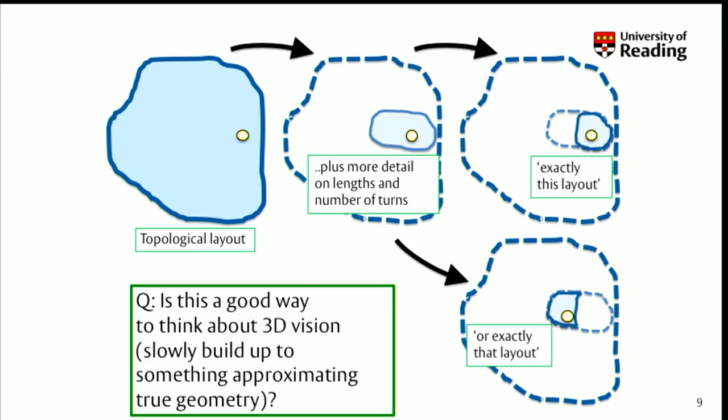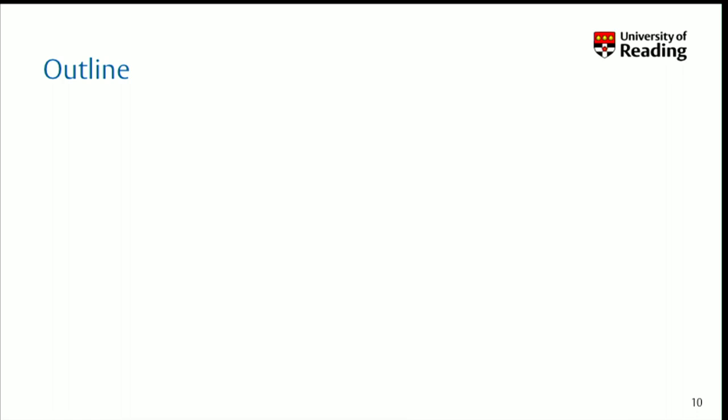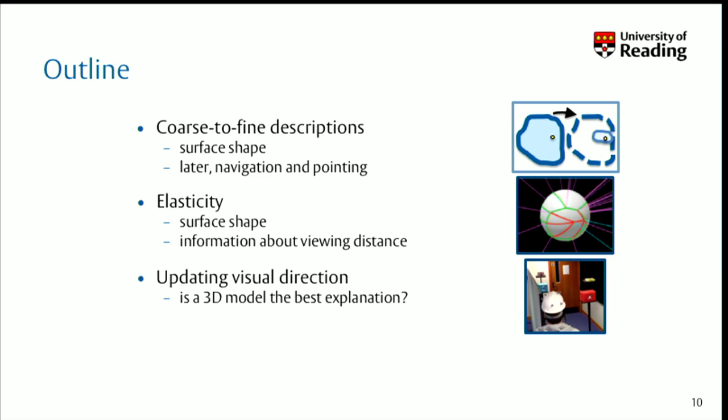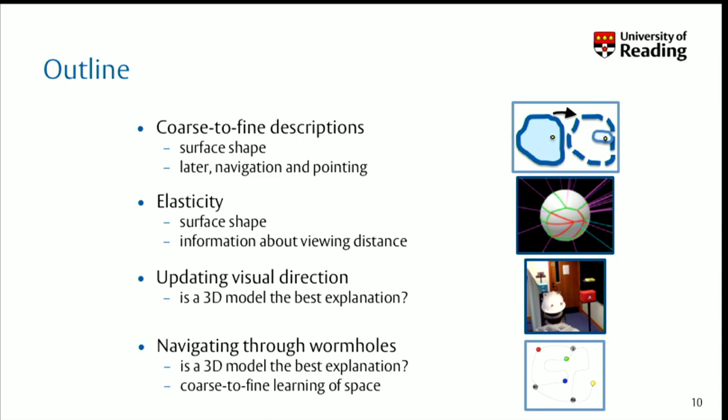So the question is: is this a good way to think about 3D vision — slowly building up something approximating true geometry? The outline of the talk covers coarse-defined descriptions, which we've done; the elasticity concept, which I introduced and will discuss more in terms of surface shape; and then two experiments at the end — one on updating visual direction, and another on navigating in a maze.